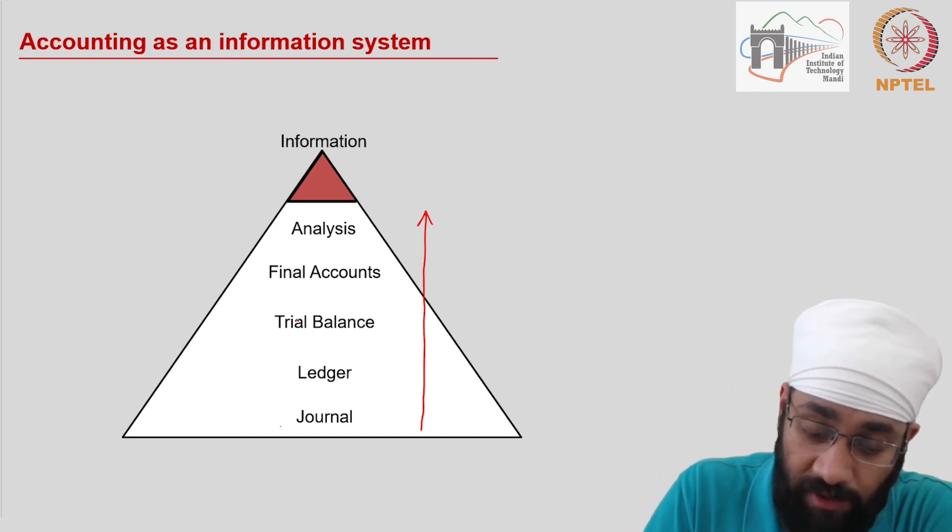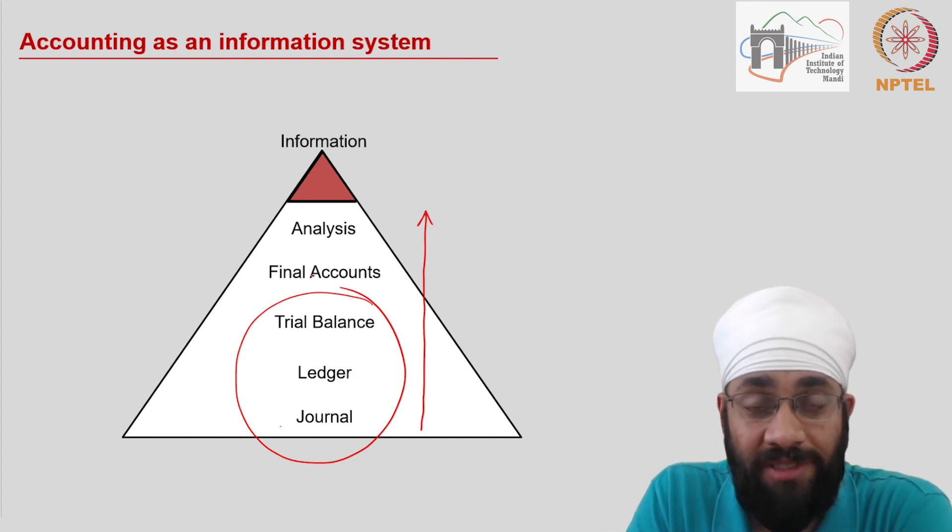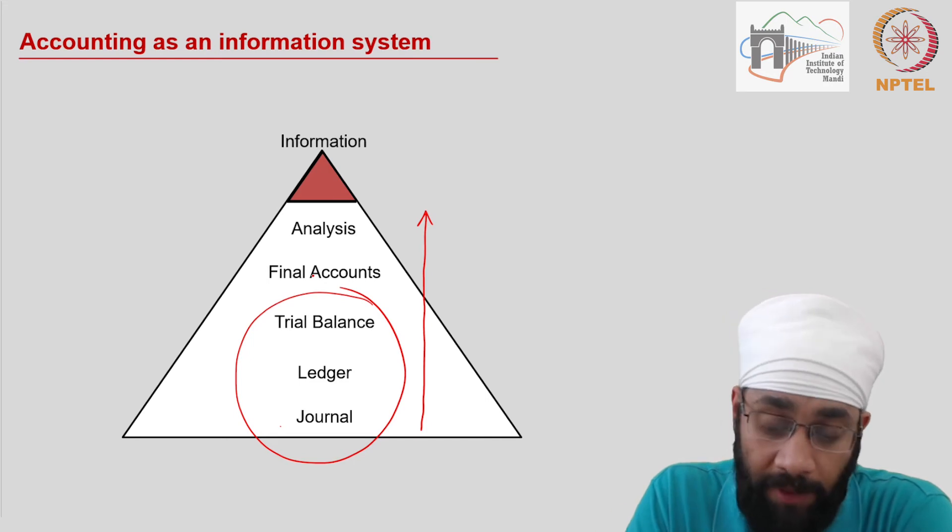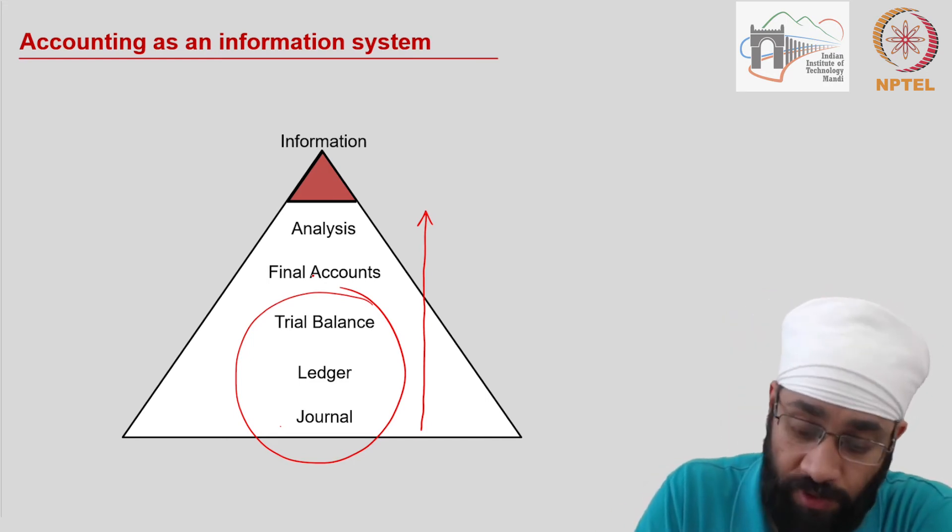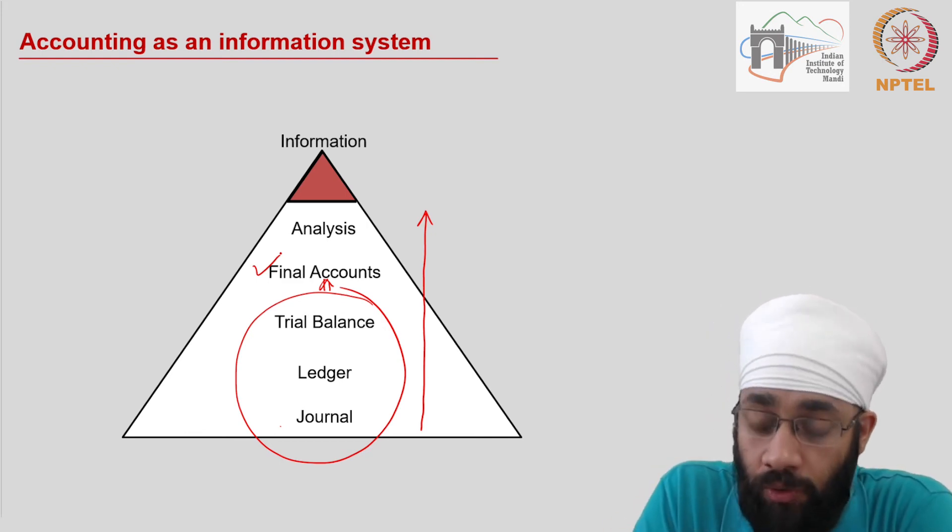The journal, ledger, and trial balance are three internal books of accounts. These books are not disclosed or published to be viewed by the public, but the outcome of this process, which is the final accounts—the balance sheet and income statement—these are the statements which are going to be disclosed.